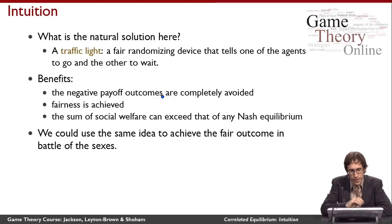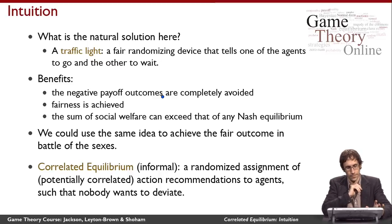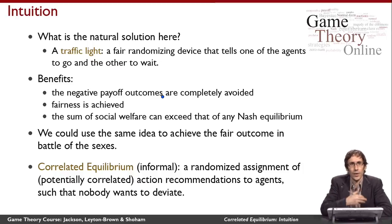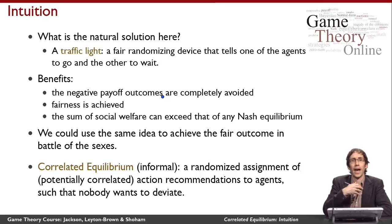We can use the same idea to achieve the fair outcome in the Battle of the Sexes game. The husband and wife could flip a coin, and depending on the result they go together either to the ballet or to the football. This is essentially the idea of a correlated equilibrium: a randomized assignment of action recommendations to agents such that everybody wants to follow those recommendations.